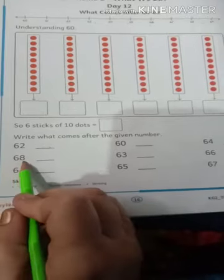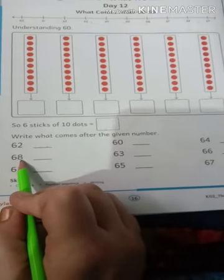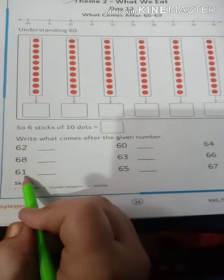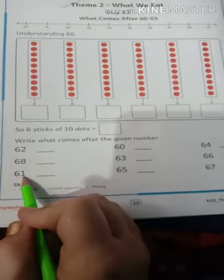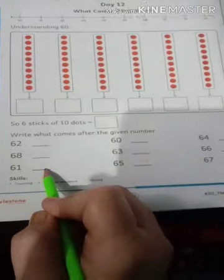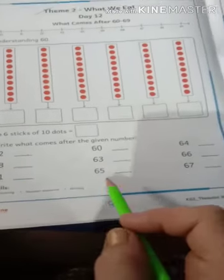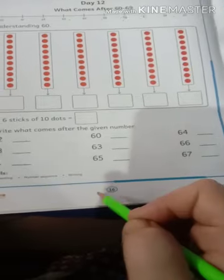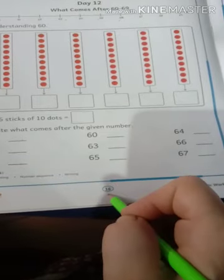Which number comes after 68? It is 69. Which number comes after 61? That is 62. Just like this, you have to complete this worksheet which is on page number 16.